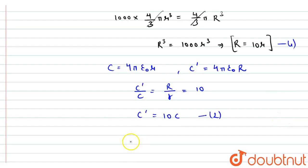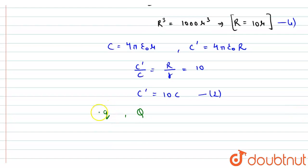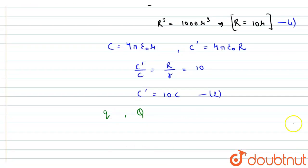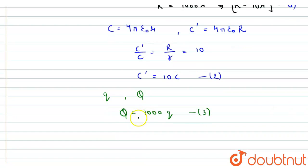Next, let small q be the charge on each of the smaller drops and capital Q be the charge on the bigger drop. Since a thousand drops each carrying charge q have combined to make the bigger drop, the total charge Q on the bigger drop equals 1000q. Let this be equation number three.